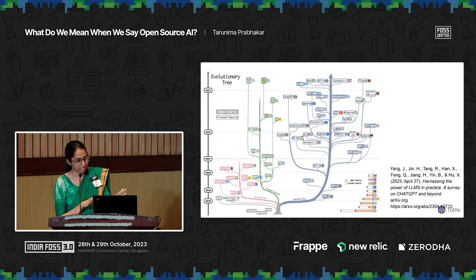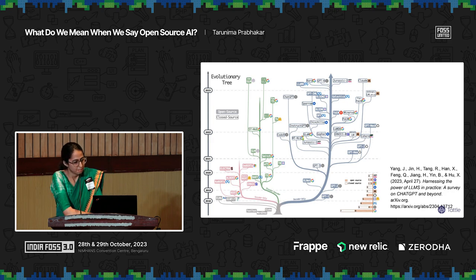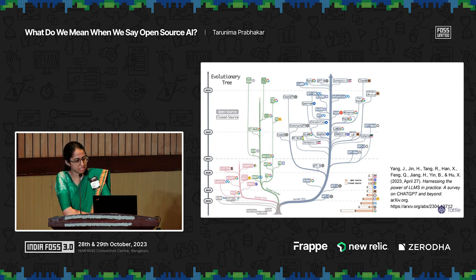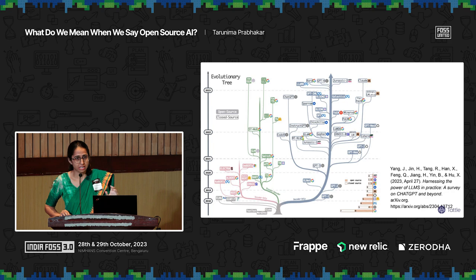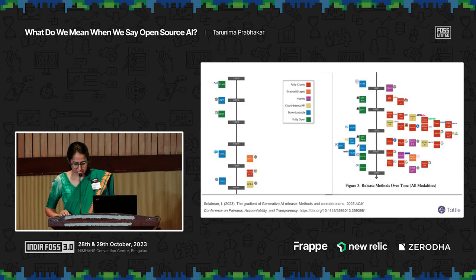These are graphs borrowed from reports and other papers. If you look at 2018, nearly nothing at the bottom of the chart is closed. As you start moving up, you see that more and more of these models are being released under a restrictive license. This chart uses a binary of either a machine learning model being open or closed. But what I'm actually saying is...